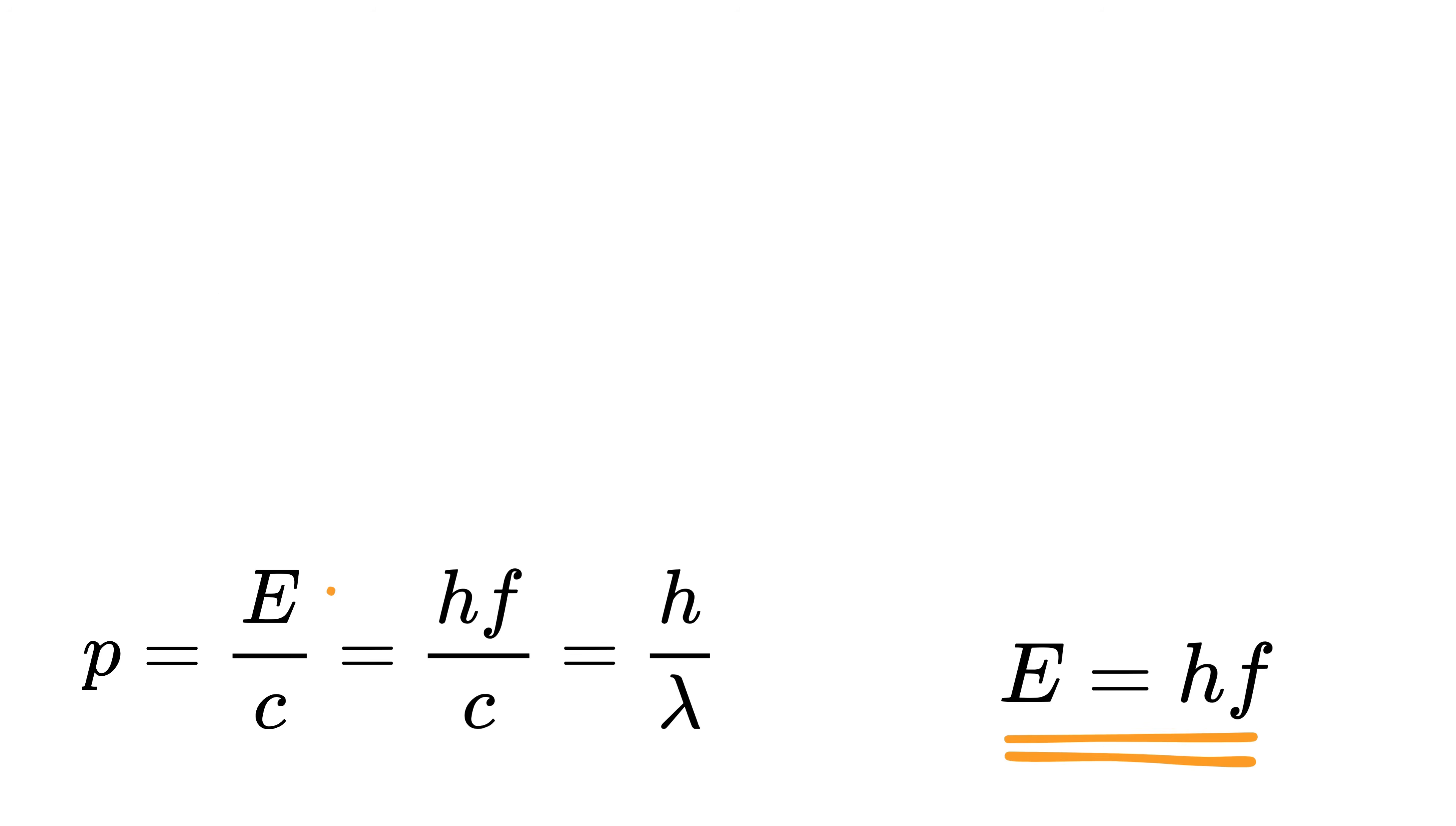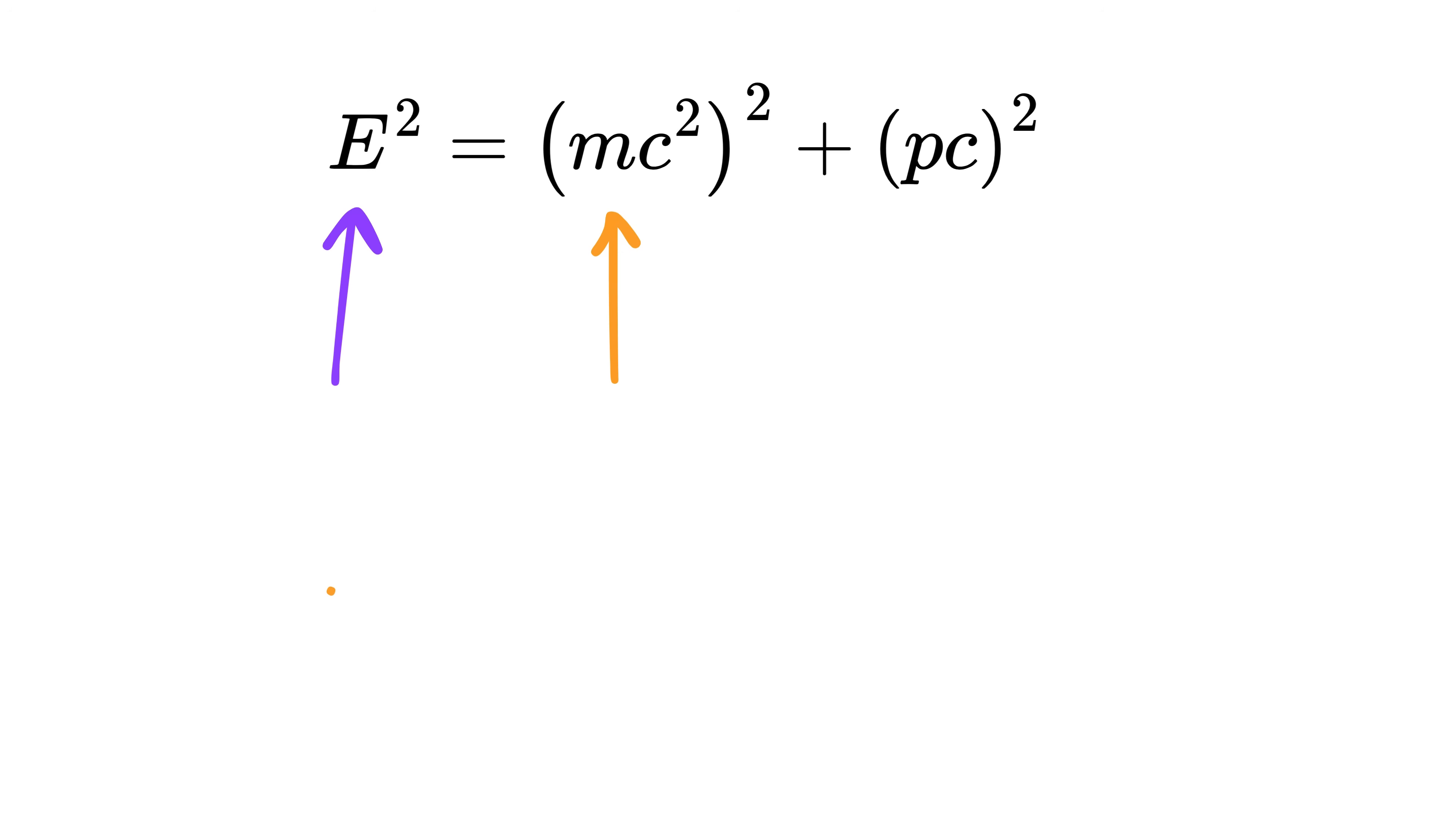Therefore, now that we've covered both massive and massless things, we need a formula that works in all cases. And that formula is E squared equals (mc squared) squared plus (pc) squared. This means that the total energy of any object is made up of two parts. The first part, (mc squared) squared, represents the energy that comes purely from the object's mass, even if it's not moving. The second part, (pc) squared, represents the energy that comes from the object's motion or momentum.